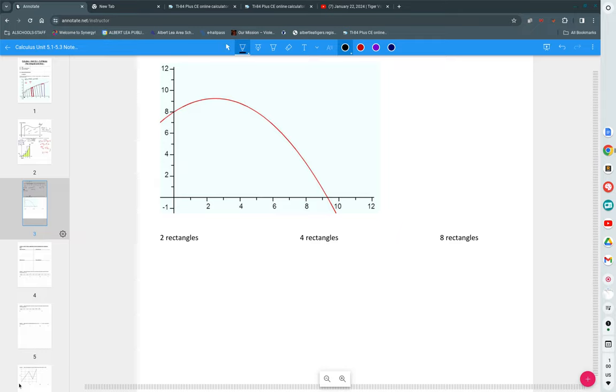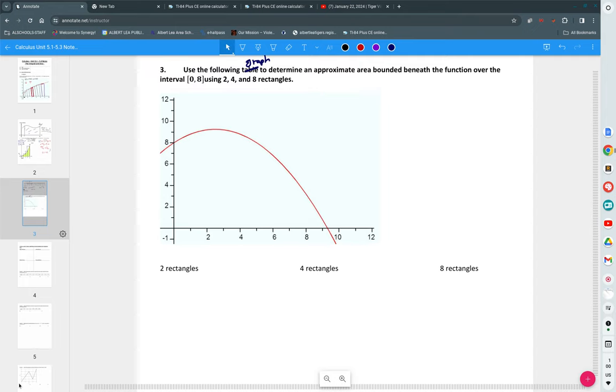So, again, we're going from where to where? 0 to 8. So we're starting at 0, and we're going over to 8. So that's kind of the region I'm working with. So like the last one, what's the width of each rectangle? 4.